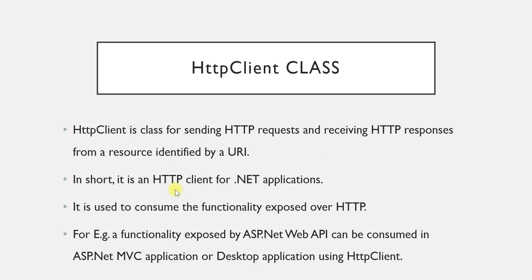In short, you can say this class is an HTTP client for all .NET applications, and it is basically used to consume the functionality exposed over HTTP. That functionality is nothing but whatever methods are available in your Web API — since it is available on Web API, it is exposed over HTTP. All those functionalities can be consumed in any .NET application using the HttpClient class — for example, in an ASP.NET MVC application, a desktop application, or even a console application.